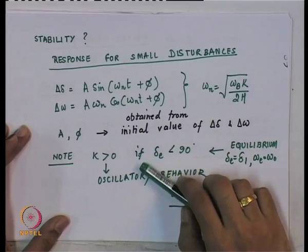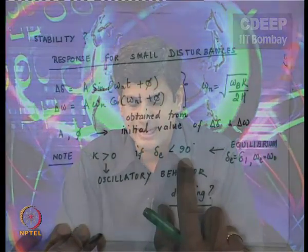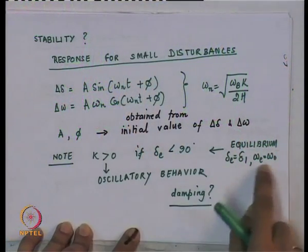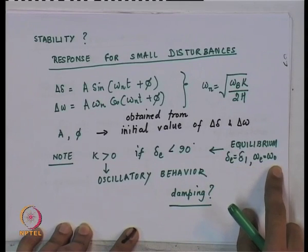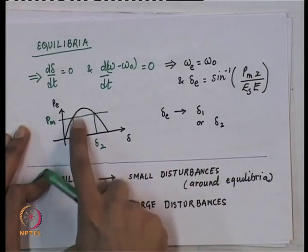If you are at the equilibrium, you simply stay there. The point is that a disturbance gives you a push from the equilibrium. Such disturbances could be things like a step change in the voltage of the infinite bus. We will assume you have been given a disturbance around an equilibrium. Once disturbed, you will oscillate around the equilibrium provided the original equilibrium was at delta_1 — less than 90 degrees — and omega_e equals omega_0.